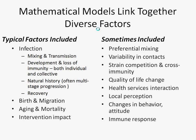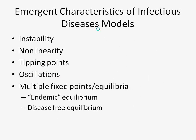This model includes a variety of factors in a very simple way related to infectious disease transmission. Models in this area include a variety of things — common ones are mixing between different members of a population, transmission of infection, development and loss of immunity, multi-stage progression, recovery, variability in contacts, and sometimes elements of immune response.